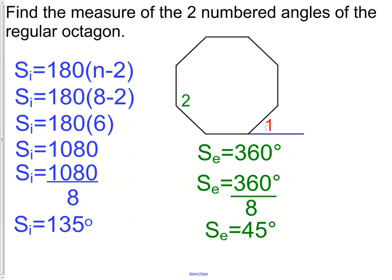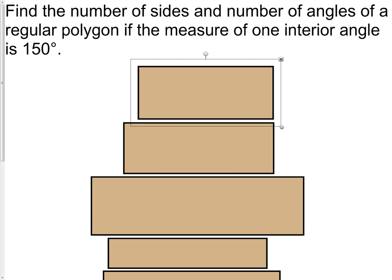On to another example with no picture: find the number of sides and angles of a regular polygon if one interior angle measures 150 degrees. The key pieces are: it is a regular polygon, and one interior angle is 150 degrees. We're looking for the number of sides and angles — and since those are always equal in a polygon, finding one answers both.